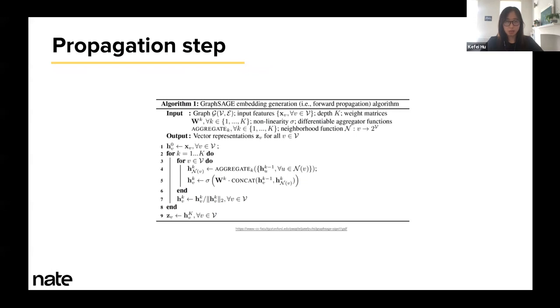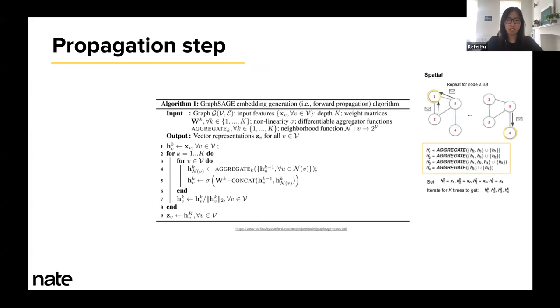The propagation step, which is the embedding generation step for GraphSAGE, is really similar to what we have seen earlier in spatial convolution. First, you would initialize the node embedding in this graph to be the initial features. Then you apply multiple convolutions where, for each node, you aggregate the features from its neighbors. Then you concatenate this neighborhood features with the features of the node. In the end, you normalize the final embedding, and you obtain ZV, which is the final representation for your target node.